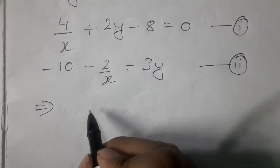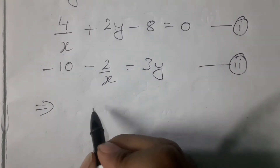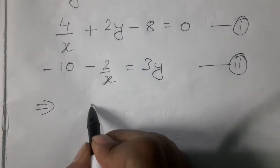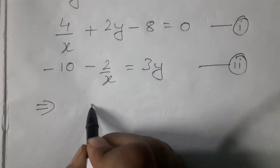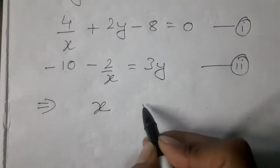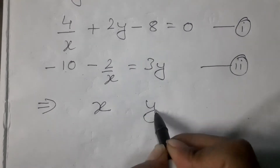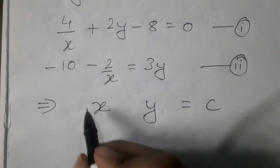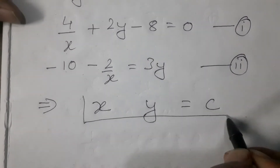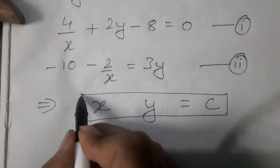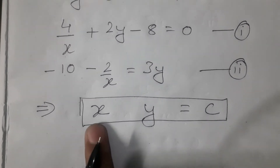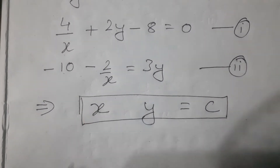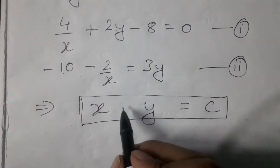By typing the matrix, you will know the question: x, y, and equals to constant. This is the format — x group, y group, and c group. x and y each have a number of coefficients.